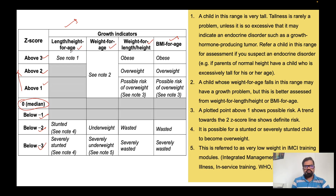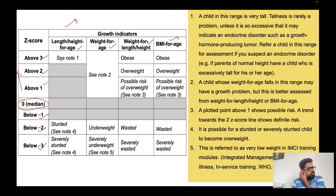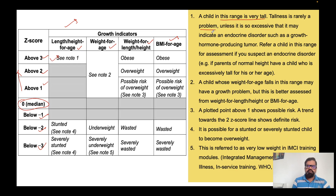For height-for-age, as age increases we check whether height is increasing appropriately. If the plotting falls above three z-score lines, the child is very tall compared to their age. This is rarely a problem unless you come across an endocrine disorder such as a growth hormone-producing tumor, in which case you need to refer to an endocrinologist.